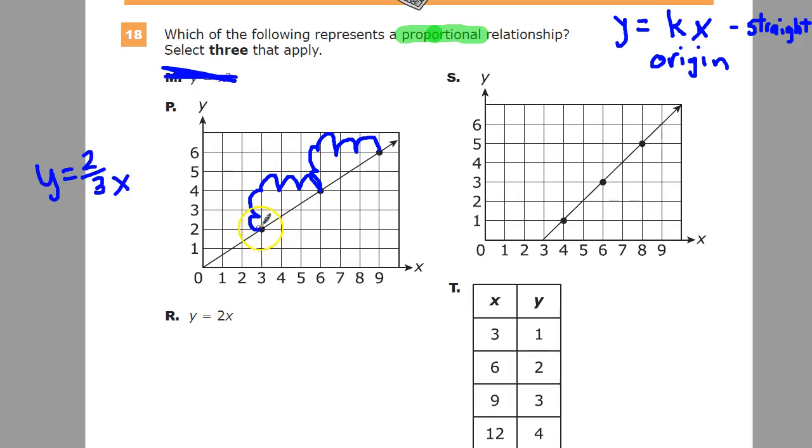When it's 1, it's at 2 over 3. When I have x is equal to 6, up here, 6 times 2 is 12 divided by 3 is 4, just like it's supposed to be. So this is indeed a proportional relationship.